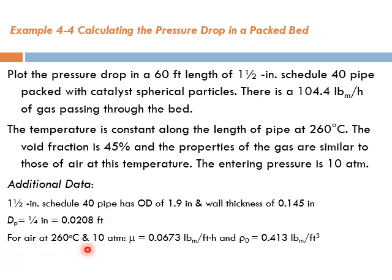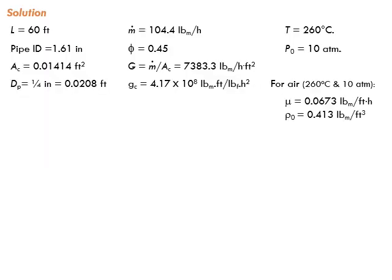For air at 260°C and 10 atmospheres, the viscosity μ you can find it, and also the density ρ you can find it as well, or you can calculate it from ideal gas law.